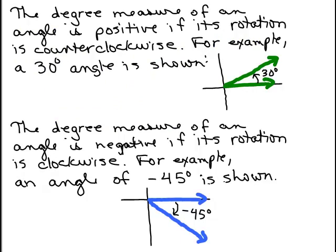The degree measure of an angle is positive if its rotation is counterclockwise. So if you have a positive angle like 30 degrees, you have a counterclockwise arrow here. If you have a counterclockwise arrow, then we're talking about a positive angle.